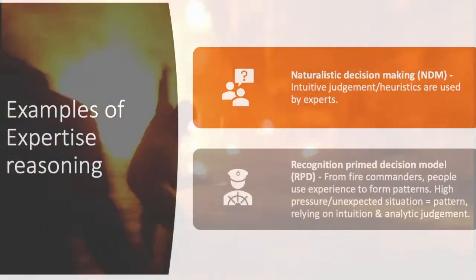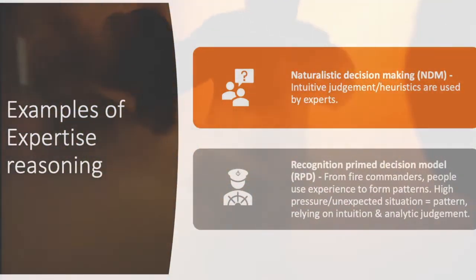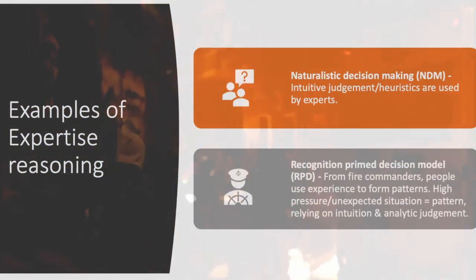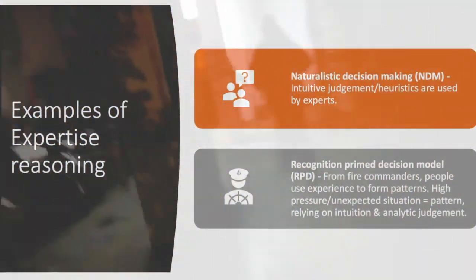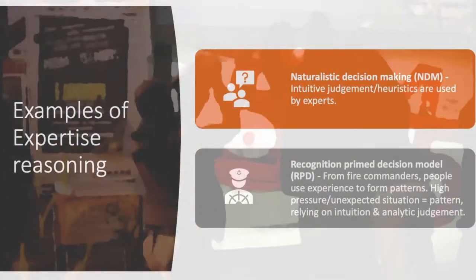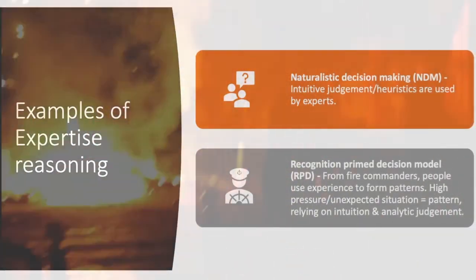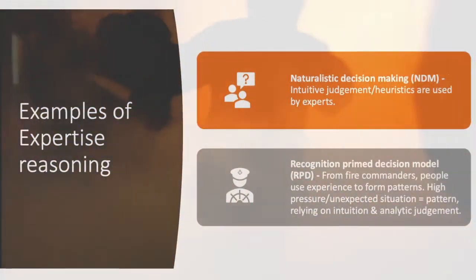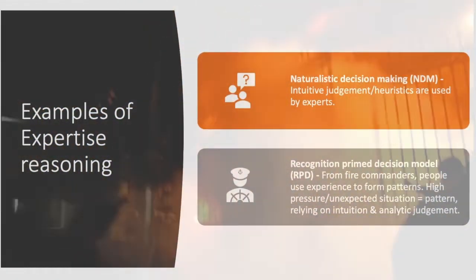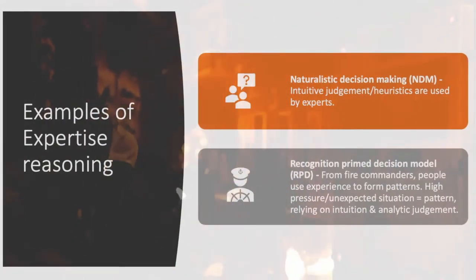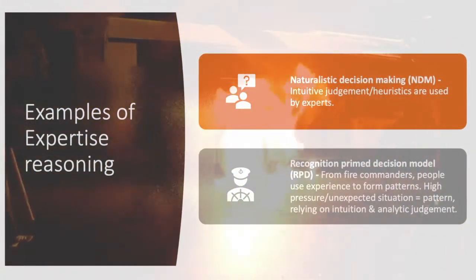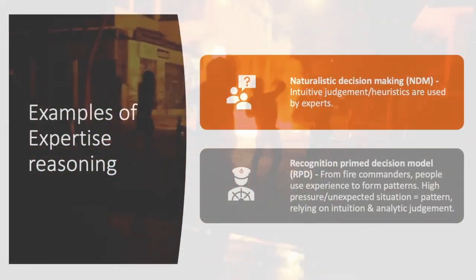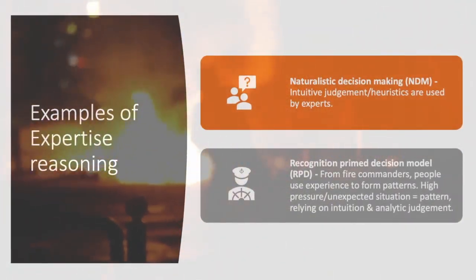Examples of expertise reasoning include naturalistic decision making, or NDM, which is intuitive judgment or heuristics used by experts. Recognition primed decision model, or RPD, are used by fire commanders or those who decide what firefighters should do. Recognition primed decisions are used by firefighters who learn from their experiences to form patterns.